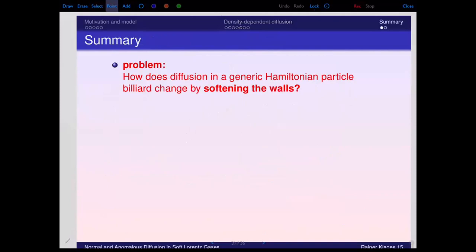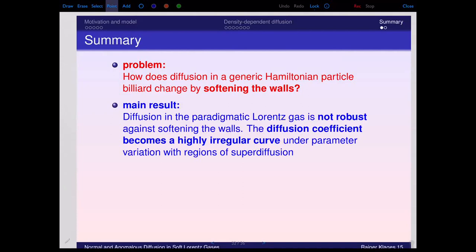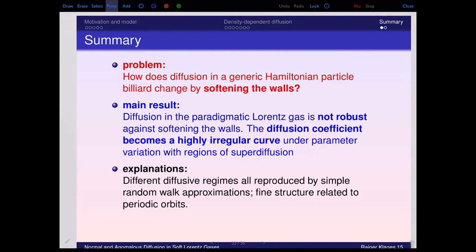In summary: the question was how does diffusion in a Lorentz gas change by softening the walls. The main result is that the diffusion coefficient under parameter variation is not at all trivial — it becomes a highly irregular curve with regions of super-diffusion. Explanations are given in terms of periodic orbits, where the fine structure is related to sensitivity under parameter variation. This was published in a PRL last year, with a second paper on the energy dependence of the diffusion constant.